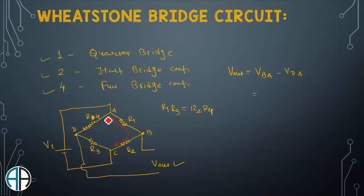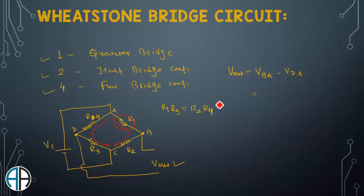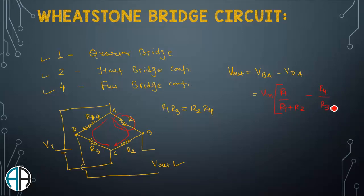One current I1 flows through one branch (A–B–C) and another current I2 flows through the other branch. Applying the voltage division rule, the output voltage Vo equals Vin times [R1/(R1+R2)] minus Vin times [R4/(R3+R4)], which can be written as Vin times {R1/(R1+R2) minus R4/(R3+R4)}. This is the general equation for output voltage in a Wheatstone bridge.